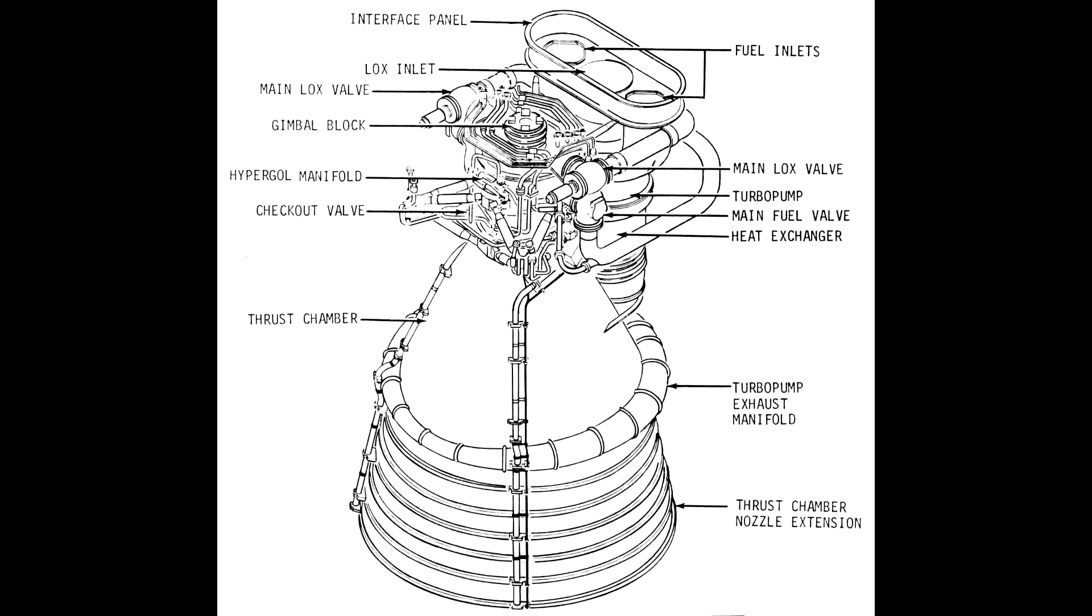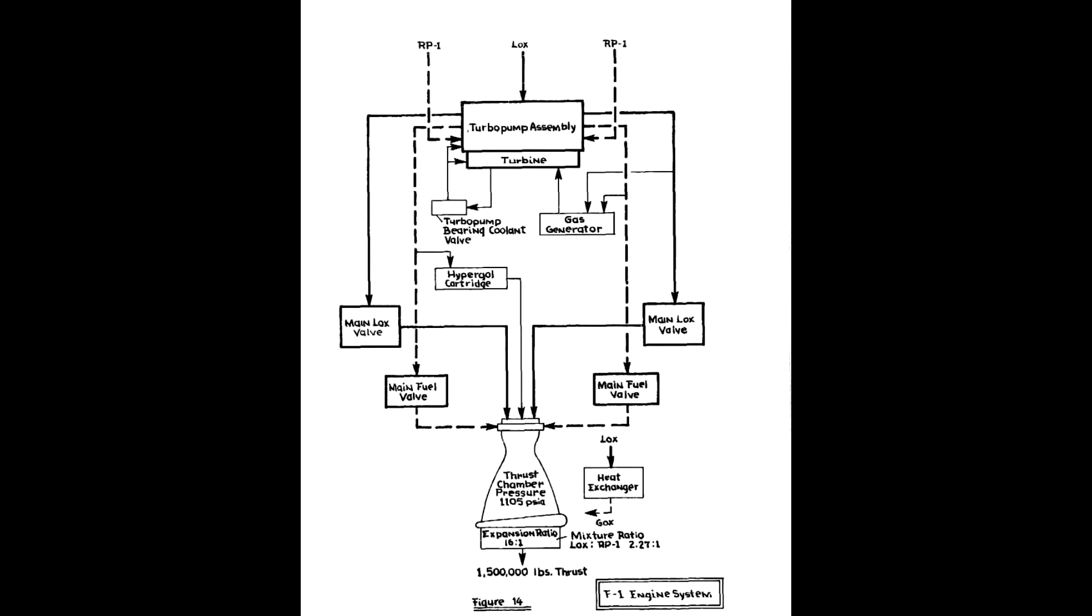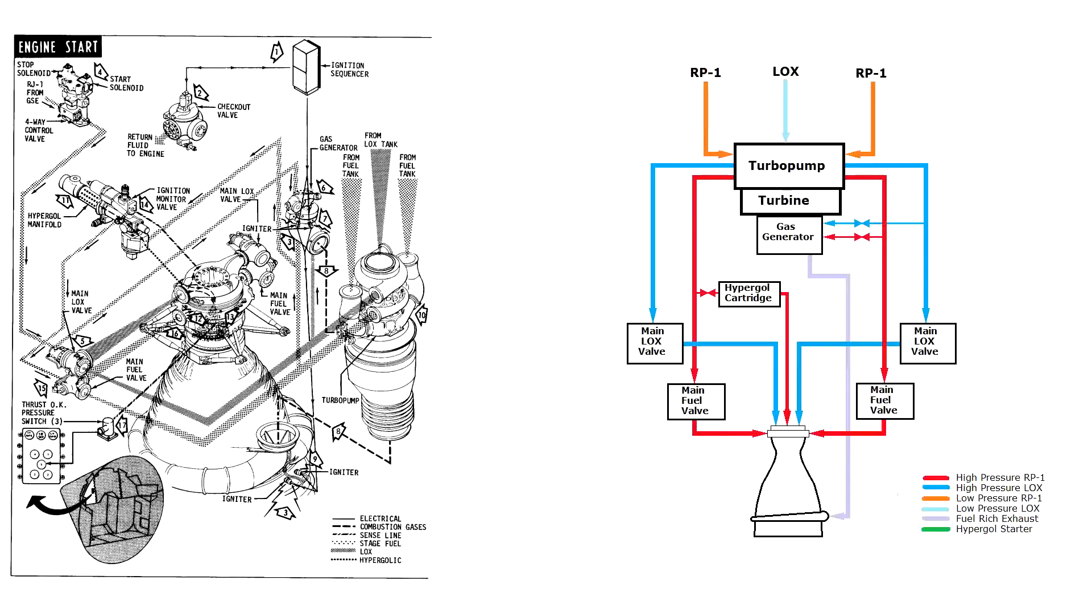This is what the mighty F1 engine looks like. It is a simple pump-fed engine burning kerosene and liquid oxygen. Its pump is powered by a gas generator, which means that it dumps its exhaust over the side. Actually, it dumps its exhaust around the inside of the engine bell. Because this is a NASA program, we have lots of documentation, including this page in the manual that has the exact startup sequence.